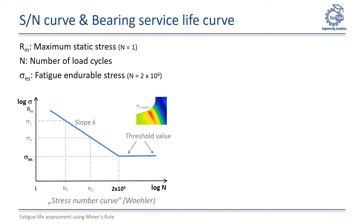If the stress amplitude remains below the enduring strength sigma ES, the material is fatigue resistant, meaning it can withstand the load forever without breaking. Sigma ES is therefore a threshold value for the SN curve, which divides material behavior into two areas: the time-resistant and the fatigue-resistant. In the time-resistant area, the SN curve descends linearly with a slope. In the fatigue-strength range, it runs parallel to the N-axis.